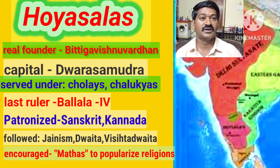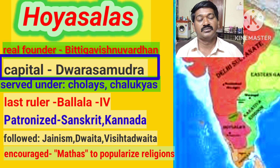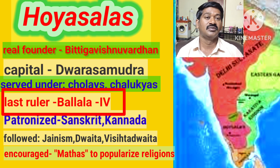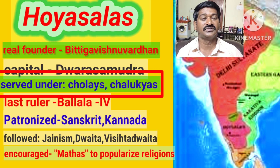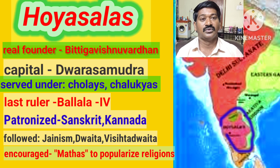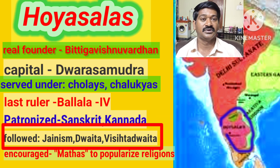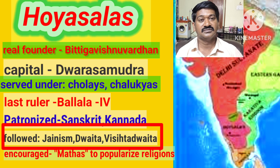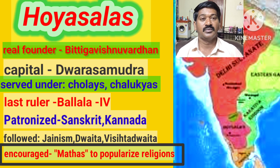Now we are going to discuss about the Hoysala dynasty. The real founder of the Hoysala dynasty was Bittiga Vishanavardhan. The capital of the Hoysala dynasty was Dwarasamudram. The last ruler was Ballala IV. Hoysala rulers served under the Chola and Chalikya dynasties. They patronized Sanskrit and Kannada languages and followed the religions of Jainism, Dvaita of Madhwacharya, and Vishishta Dvaita of Ramanujacharya. They encouraged Matas to popularize religions.